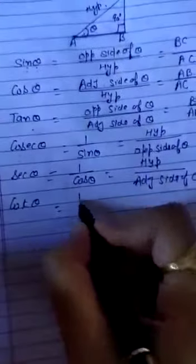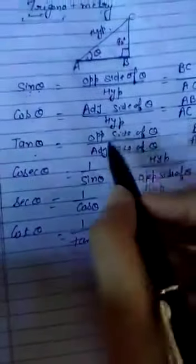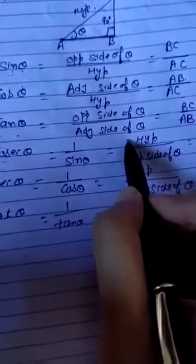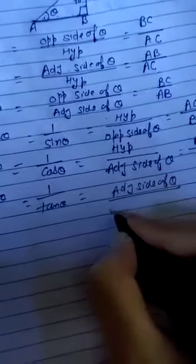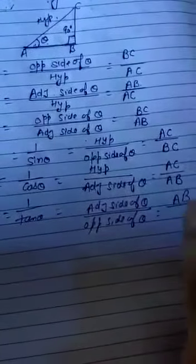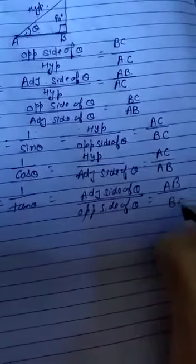The next one is cotangent theta. Cotangent theta is the reciprocal of tangent theta. Tangent theta is opposite side of theta divided by adjacent side of theta, so the value of cotangent theta is adjacent side of theta divided by opposite side of theta. The adjacent side of theta is AB and the opposite side of theta is BC. So, cotangent theta equals AB upon BC.